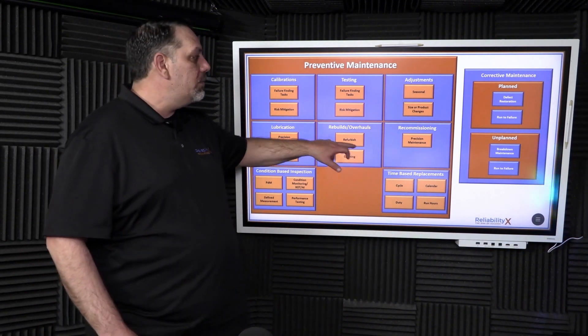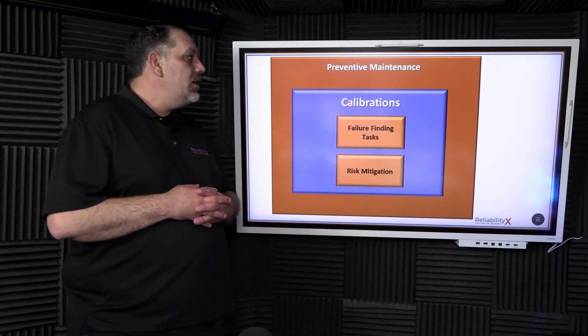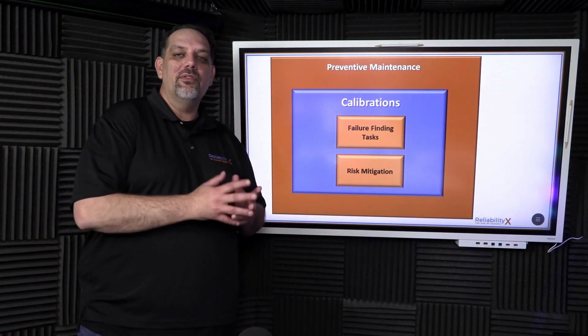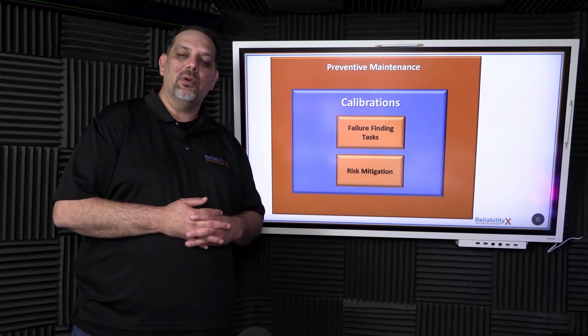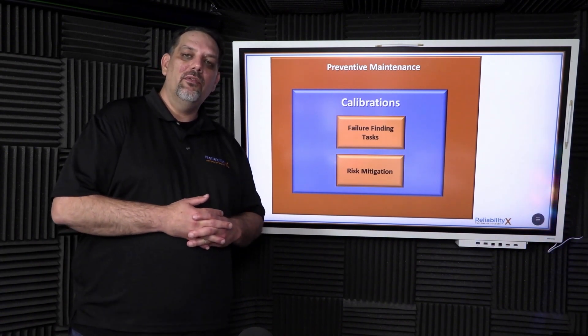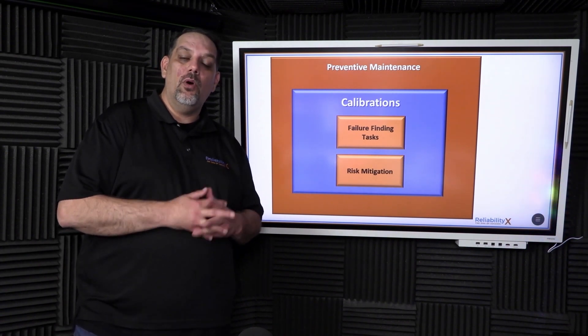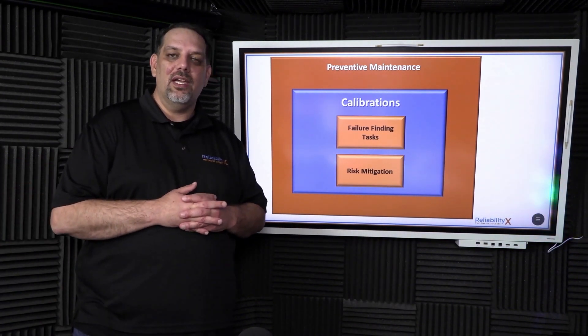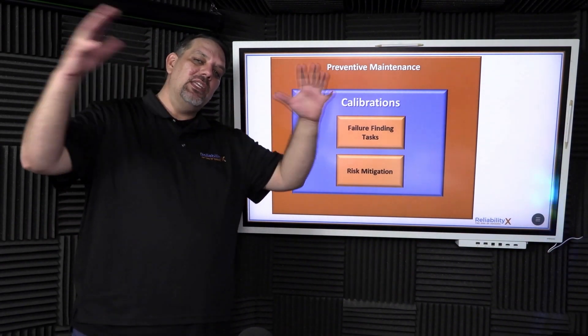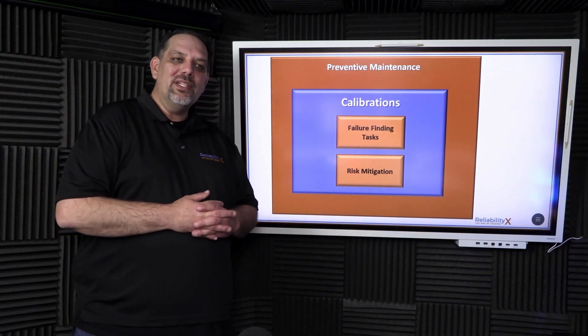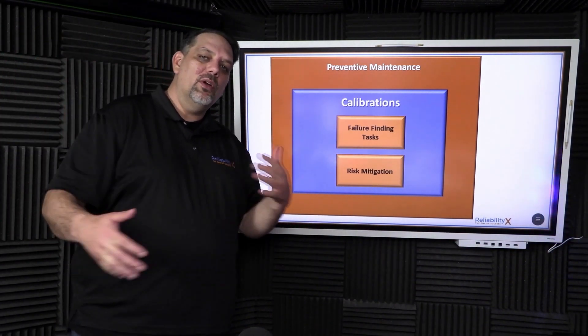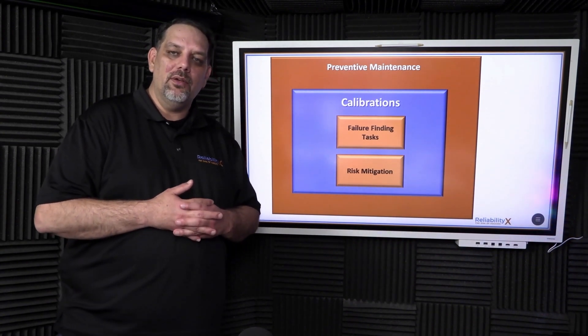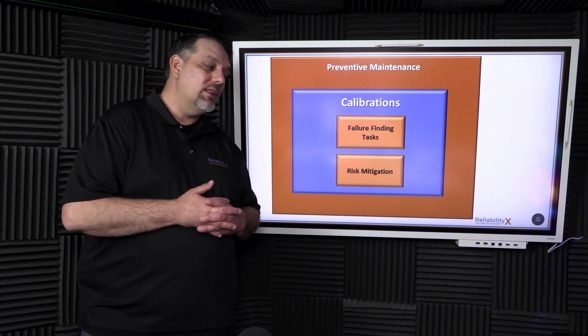We're going to start with calibrations first. So PM is the big blanket of the program. Those are all the activities we do to prevent defects from occurring within our system, or to go out and try to find defects to stay on top of things. PM is the overall bucket. What we see a lot of time is people say, well, I'm going to do my PMs, but what does that really mean?